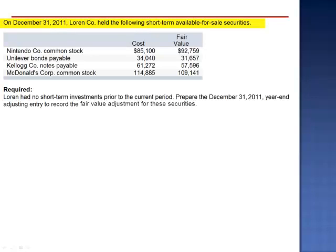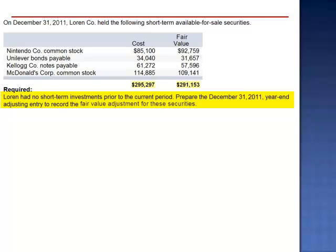Exercise 9. On December 31, 2011, Lauren Company held the following short-term available-for-sale securities — a combination of stocks, bonds, and notes. The total cost of these securities is $295,297, but as of December 31, 2011, the total fair value has dropped to $291,153. Lauren had no short-term investments prior to the current period. Prepare the December 31, 2011, year-end adjusting entry to record the fair value adjustment for these securities.